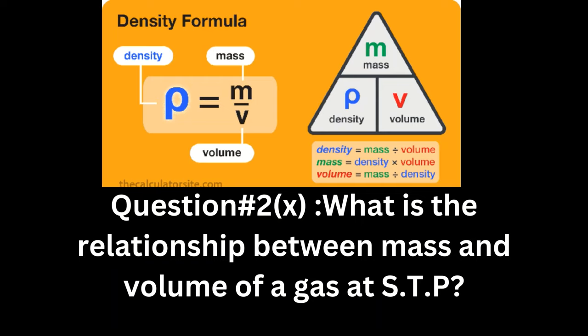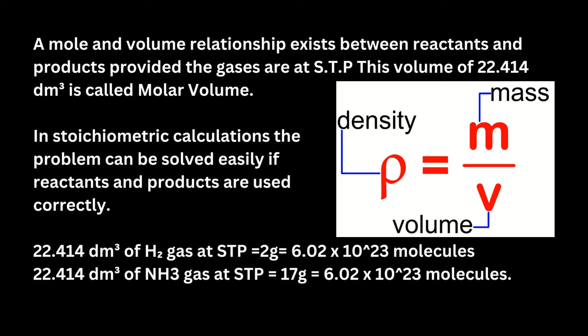Question number two, part ten: what is the relationship between mass and volume of a gas at STP? A mole and volume relationship exists between reactants and products, provided the gases are at STP. This volume of 22.414 cubic decimeters is called molar volume. In stoichiometric calculations, 22.414 dm³ of hydrogen gas at STP = 2 grams = 6.02 × 10²³ molecules. 22.414 dm³ of ammonia gas at STP = 17 grams = 6.02 × 10²³ molecules.